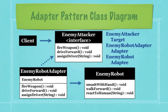So how do you make the enemy robot look like just any other enemy attacker? You take the adapter and store inside of it an enemy robot using composition. Then each time one of these methods is called — fire weapon, drive forward, or assign driver — you point to the correct version for the enemy robot stored inside of the adapter. That's a basic overview of the adapter pattern, so let's get into the code.